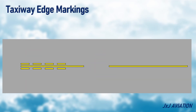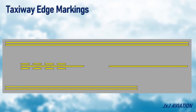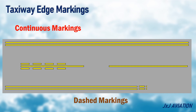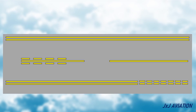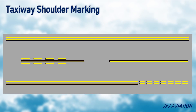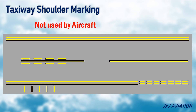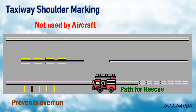Taxiway edge markings are used to indicate the edge of the taxiway. There are two types: continuous markings, which consist of two yellow lines, and dashed markings, which consist of double yellow lines with gaps in between. Dashed markings indicate a paved surface of the taxiway which should not be used by aircraft. This prevents aircraft overrun and provides a path for rescue services.